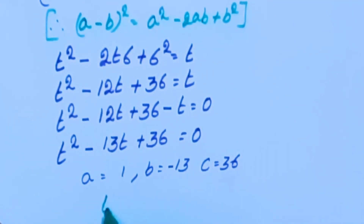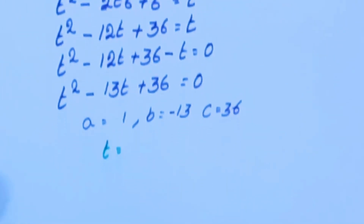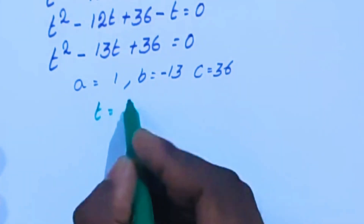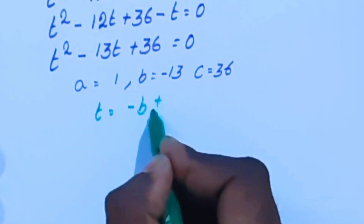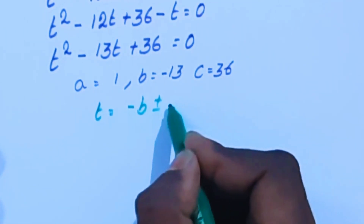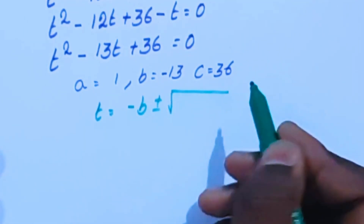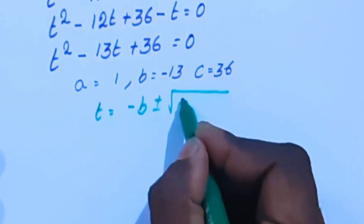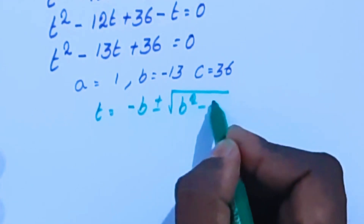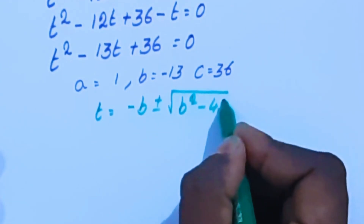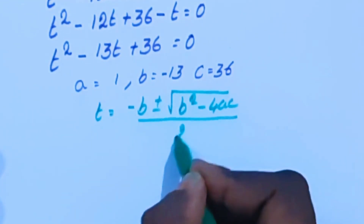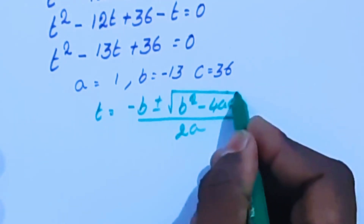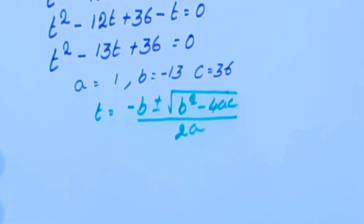The quadratic formula is: t equals minus b plus or minus square root of (b squared minus 4ac), divided by 2a. This is the formula we are going to apply here.